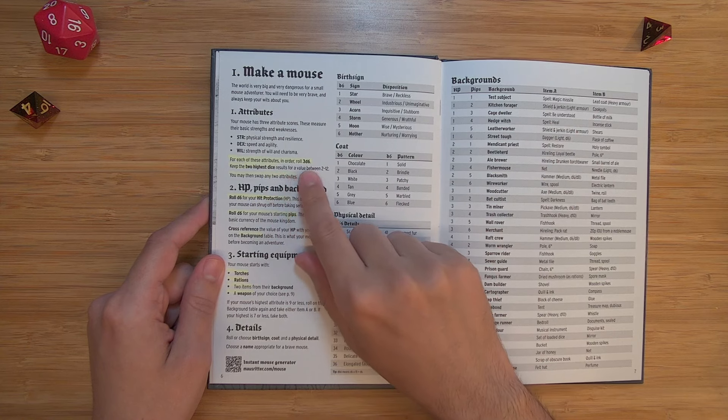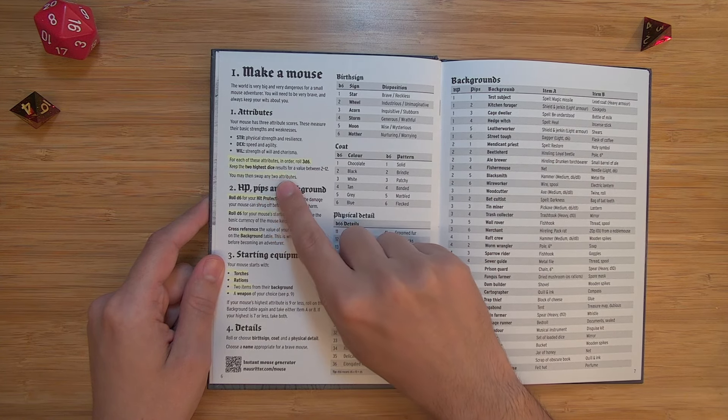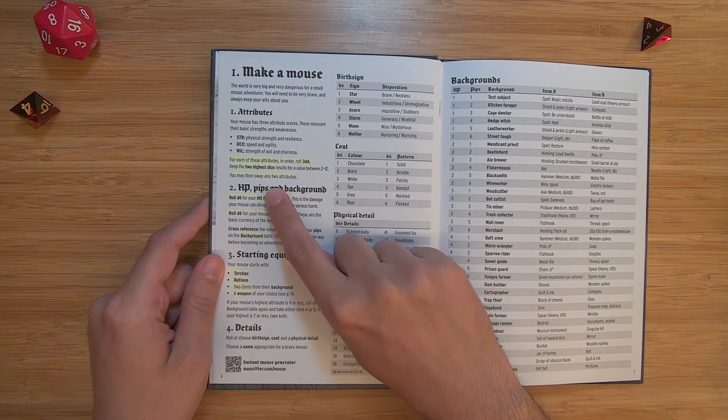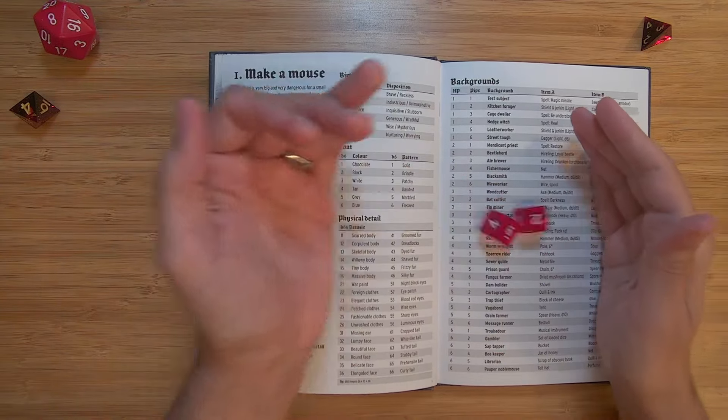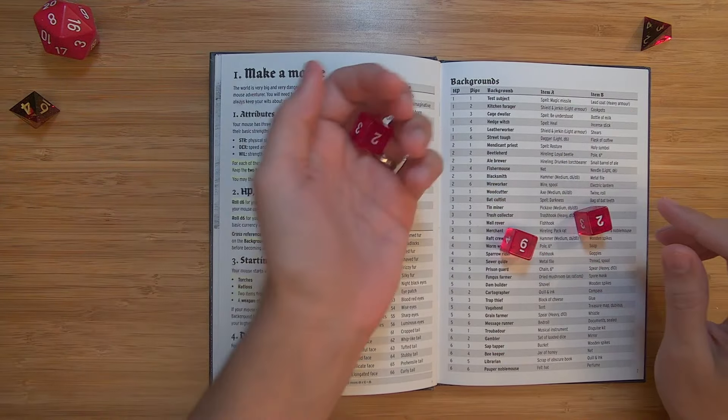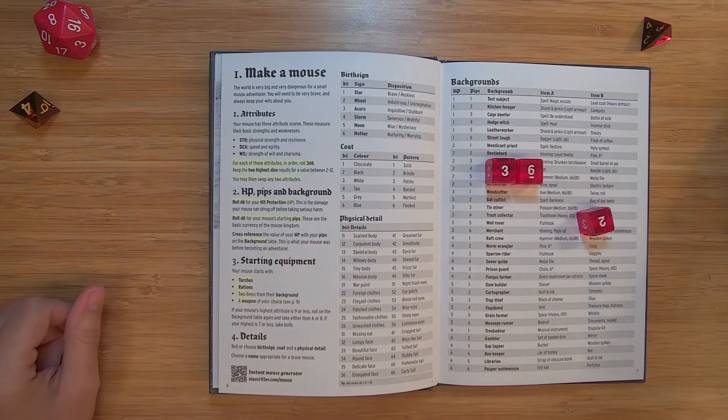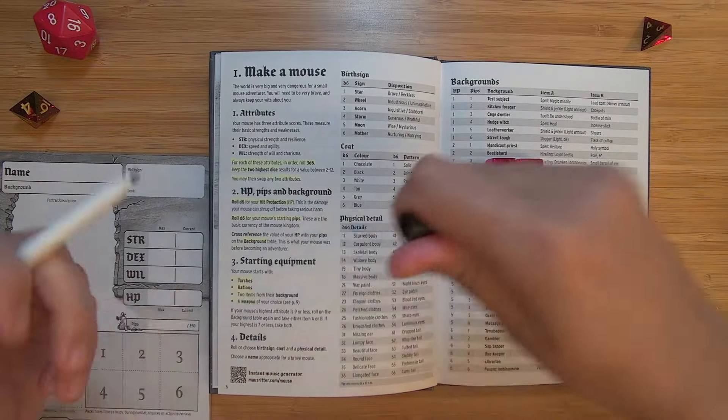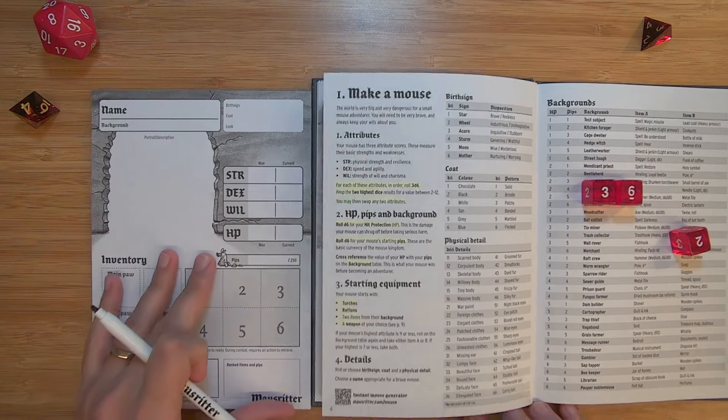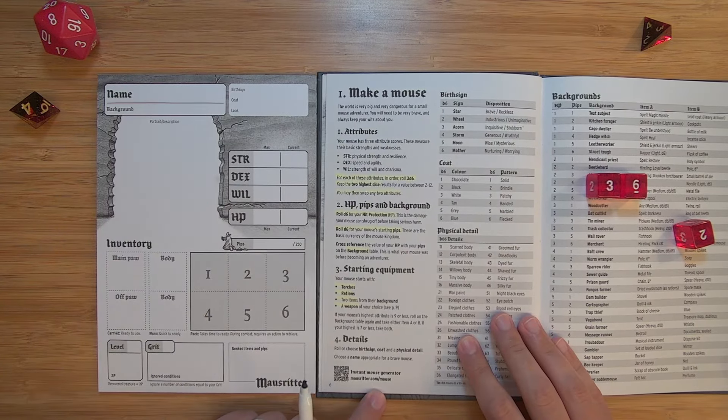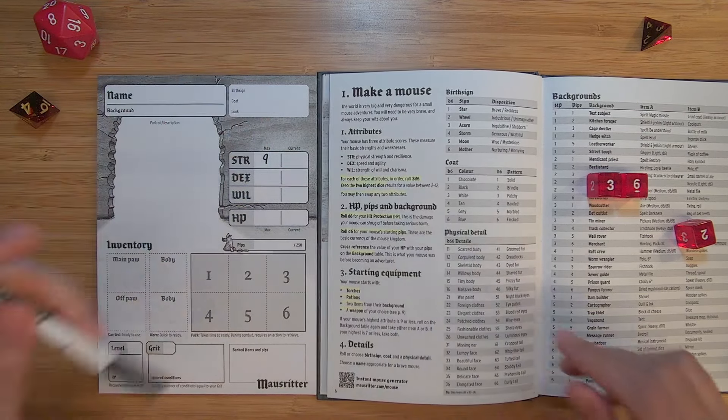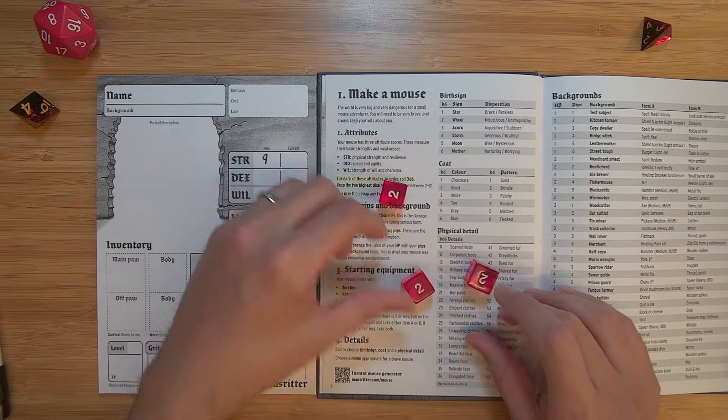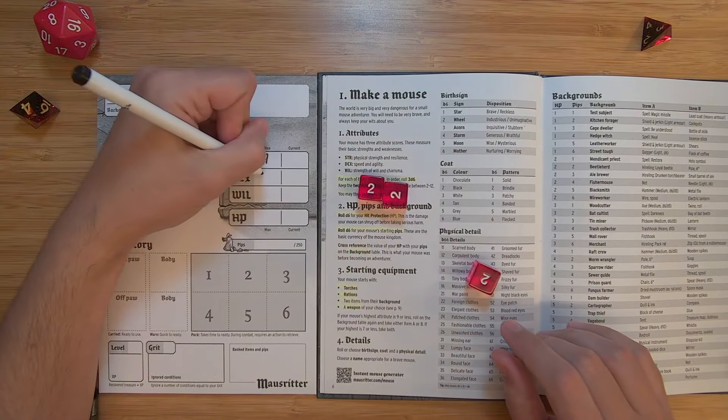So for each of these attributes, in order, roll 3d6 and keep the two highest results for a value between 2 and 12. You may then swap any two attributes. So for strength, if I was going to roll for strength, for this mouse, I would roll 2d6. And I've got a 6 and a 2. And actually, I'm supposed to roll one more. I just read the rule. So I've got a 9 for my strength. So let's actually just go ahead and make a little mouse. We'll go ahead and go through the rules to make ourselves a mouse. And you'll see how easy it is. And there's a little QR code down here. mousewriter.com/mouse. And you can just click a button and it'll generate a mouse for you. So what was it? 9. So our strength is 9.